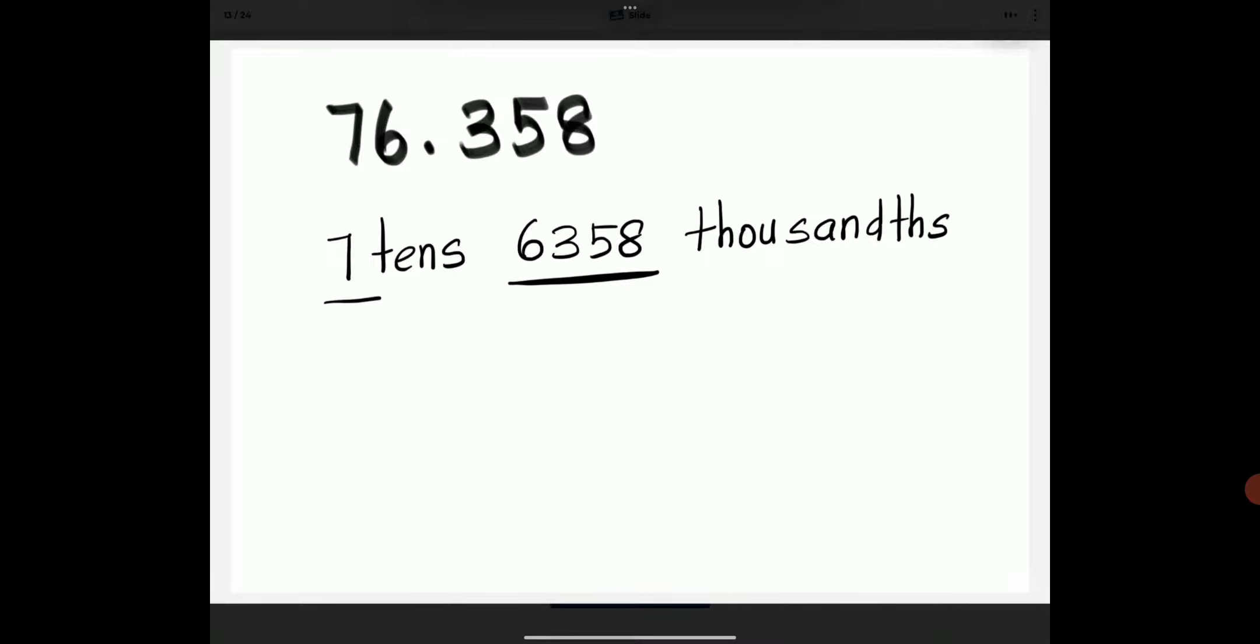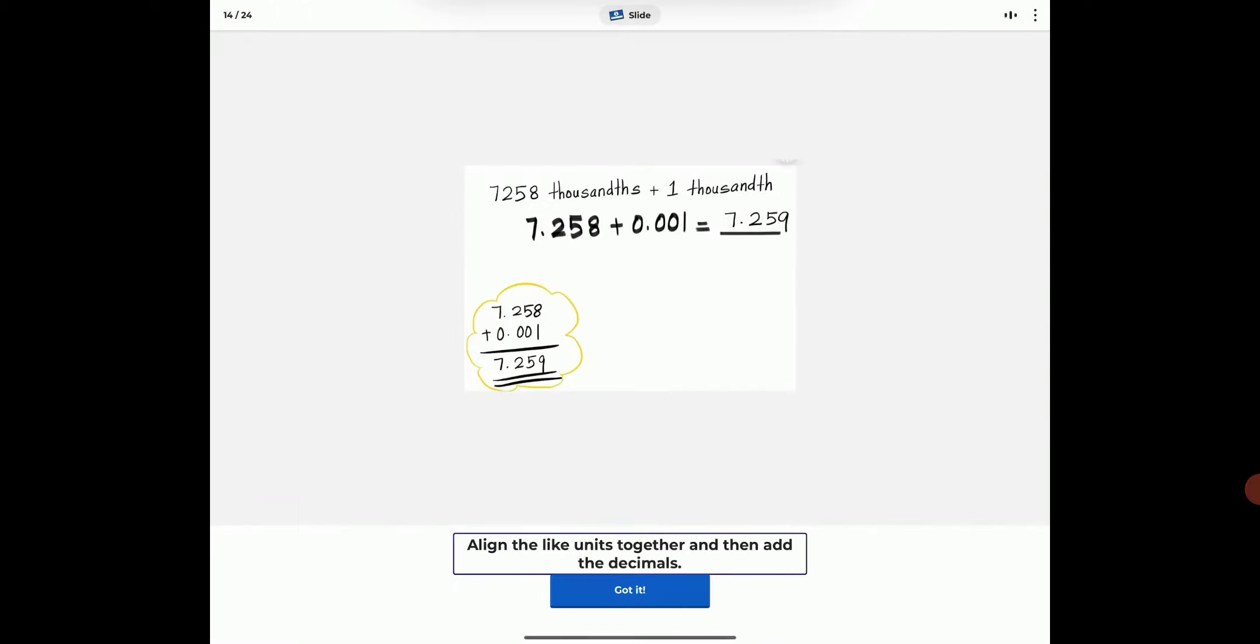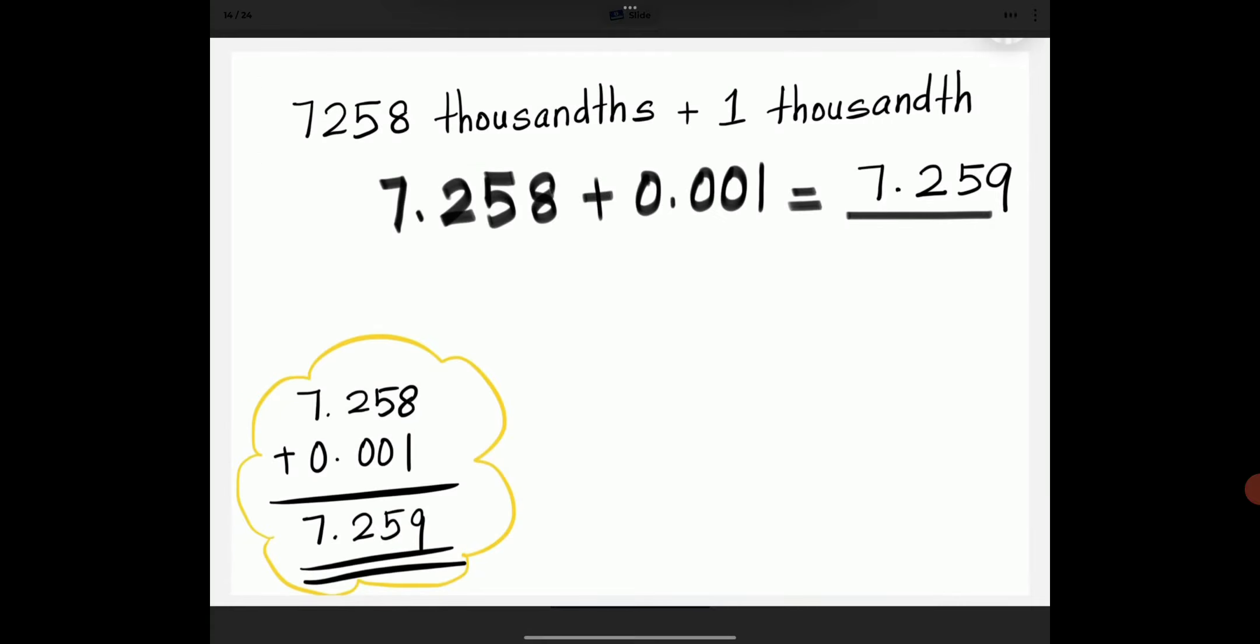76.358 is also 7 tens, 6,358 thousandths. Align the like units together and then add the decimals.